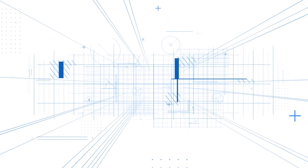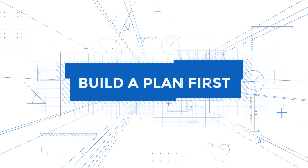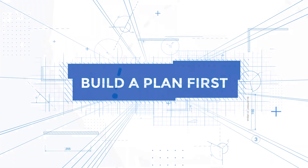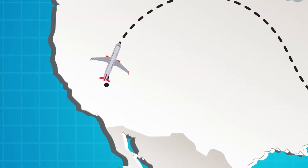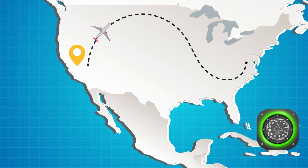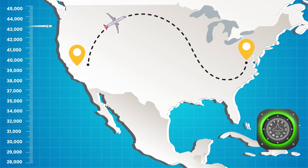EVM requires one to build a plan first and execute the project according to that plan. You can think of a flight plan. The pilot charts a course from point A to point B and knows the altitude and speed she must maintain to get there.